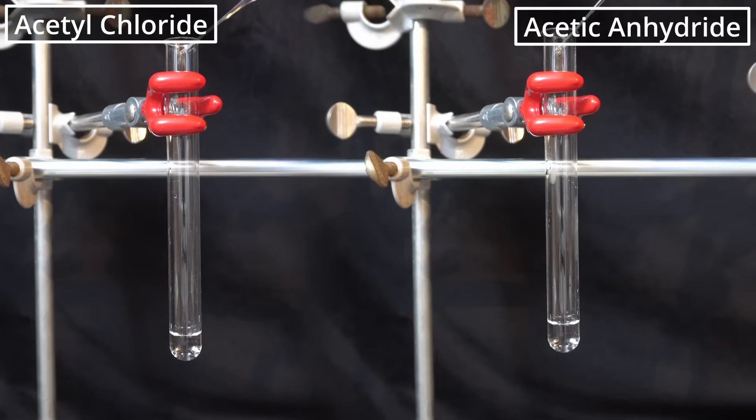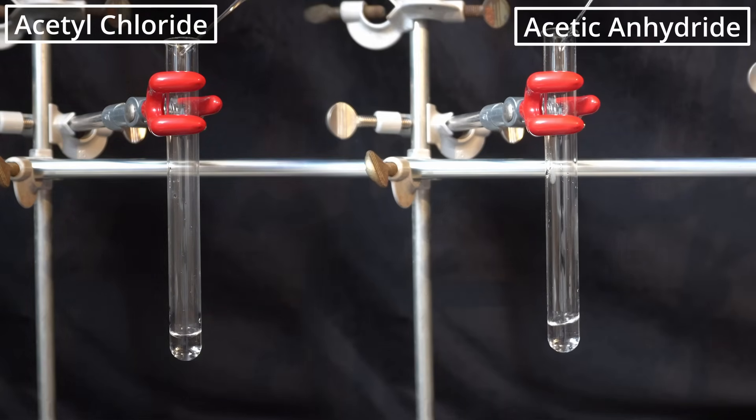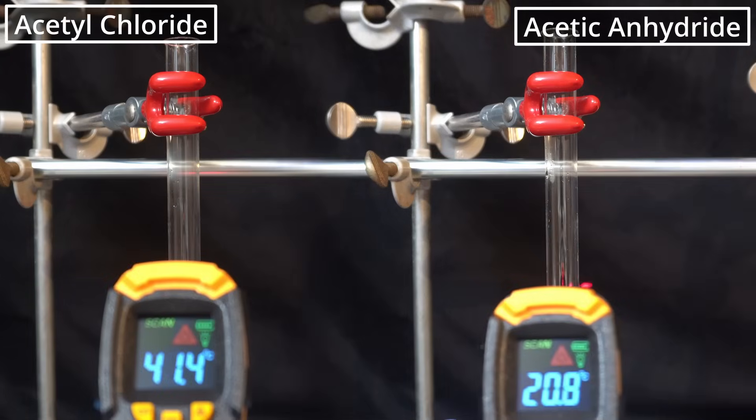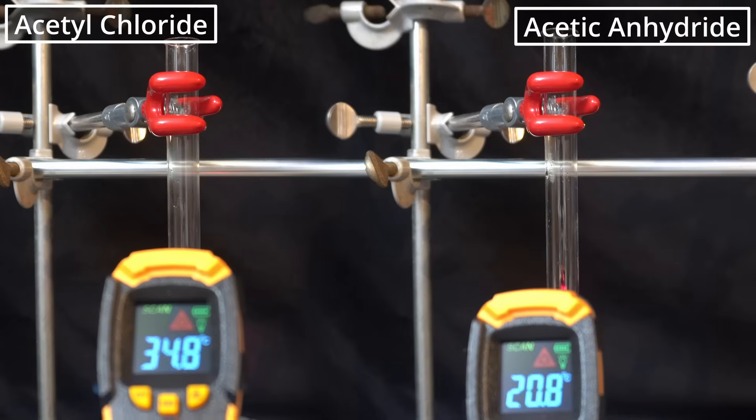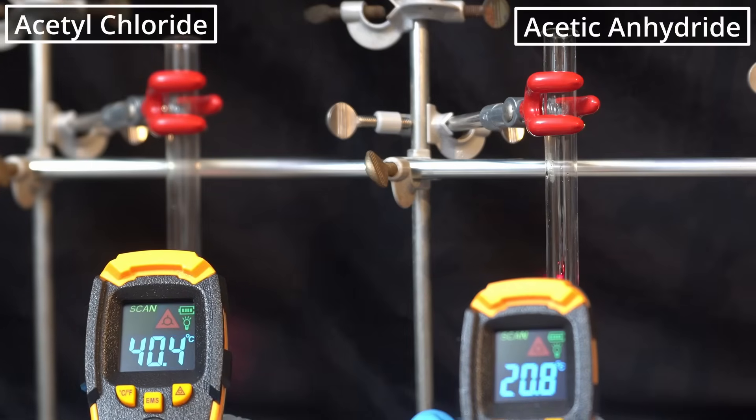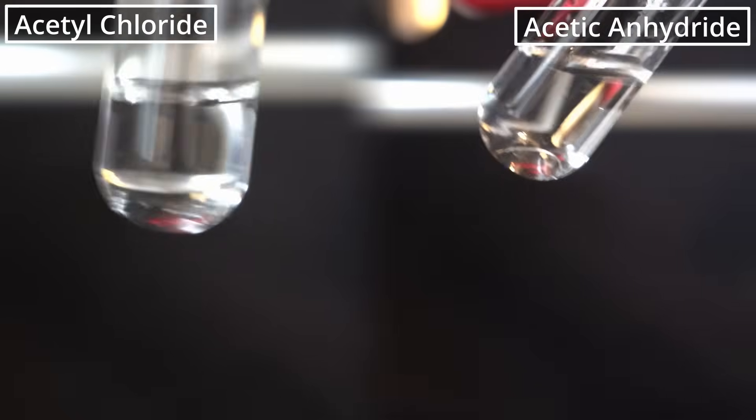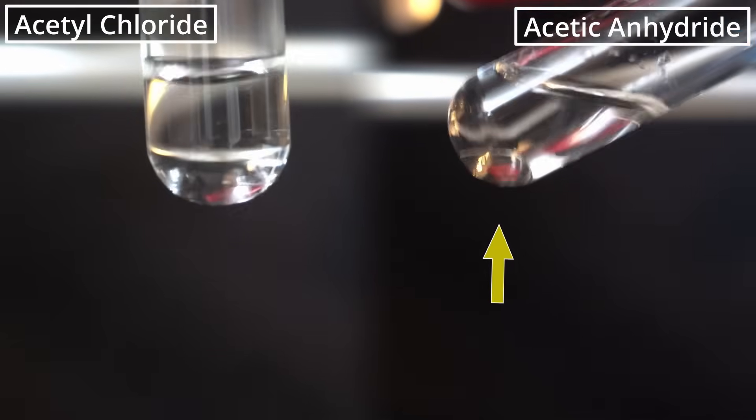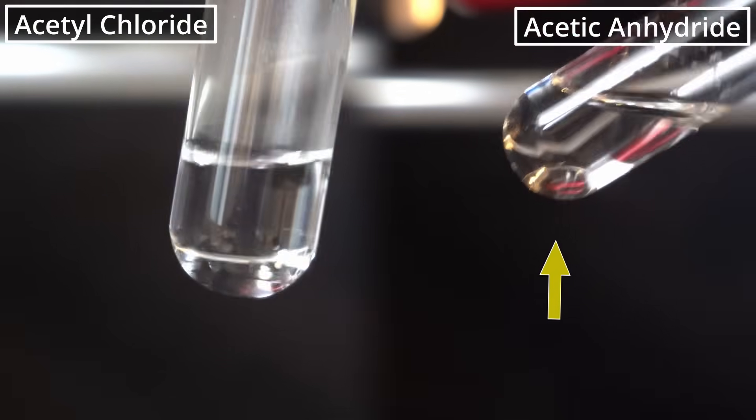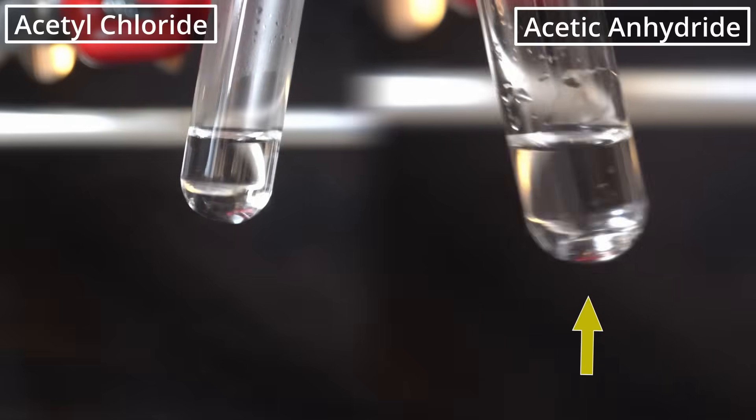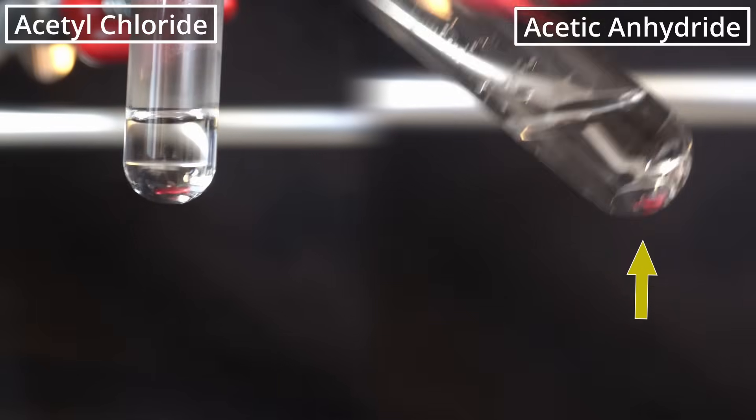This is very apparent when comparing their reactions with water. Acetyl chloride immediately hydrolyzes, which causes the temperature to quickly rise above 40 degrees, whereas the acetic anhydride remains at room temperature. If you look closely at the bottom of the test tube, there's actually a separate layer of acetic anhydride, and it only disappears after about an hour.